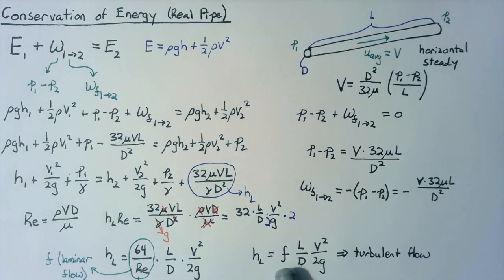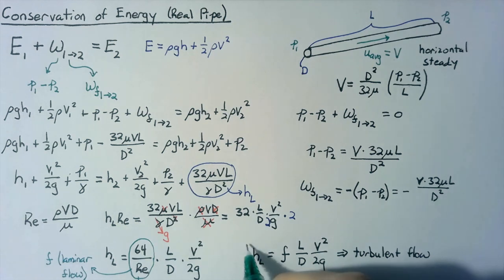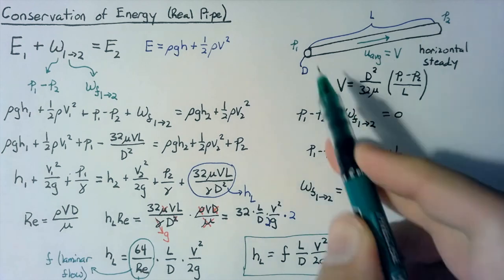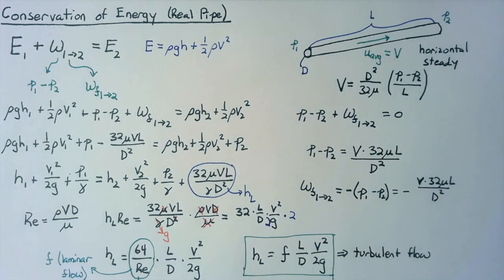Now, we don't have a clean equation for the Darcy friction factor for turbulent flow. So instead of just plugging and chugging, we're going to have to either do some really nasty math or go and just pick off the value from a chart, which is the normal way of doing things. But either way, this right here is what we'll be using to calculate the head loss for pipes moving forward.